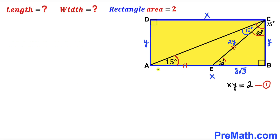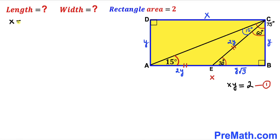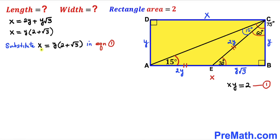We can see that sides AE and EC are equal in length. If side EC is 2y, then AE is 2y as well. The whole side AB equals AE plus EB, which is 2y plus y√3, and this equals X. So therefore X equals y(2 + √3). We'll substitute this into equation 1.